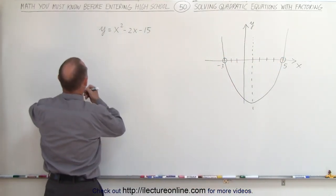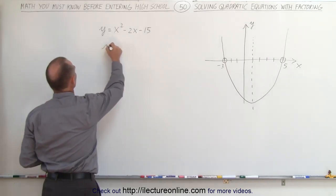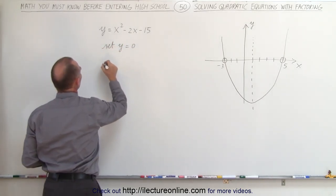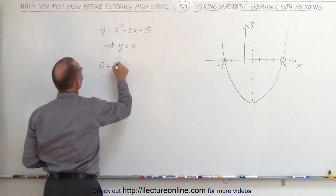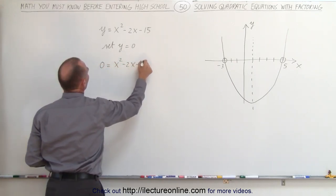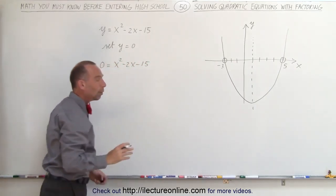So we're going to set y = 0, and we get 0 = x² - 2x - 15. What we're going to do now is factor the right side of this equation.